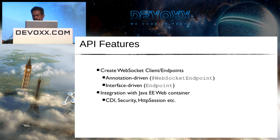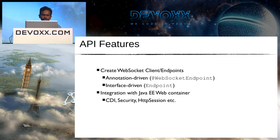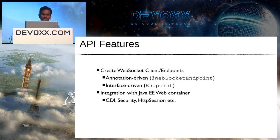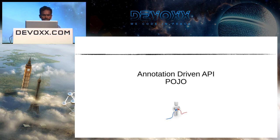The API contains two programming models: an annotation-driven model, well-integrated with Java EE web containers and other features, and an interface-driven model where you extend a certain interface to create a WebSocket endpoint, which can be used in standalone or EE environments.